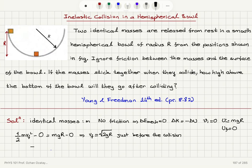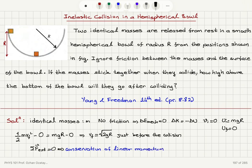During the collision, there is no external force acting on the system, so we have conservation of linear momentum. The initial speed of the block coming in is √(2gR) in the î direction. This equals the total mass 2M times the final velocity of the combined system, which gives us a final velocity of √(gR/2) in the î direction.